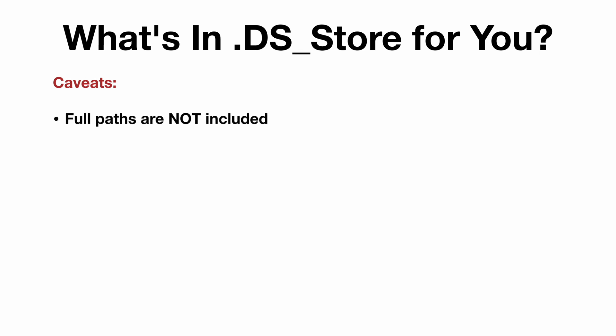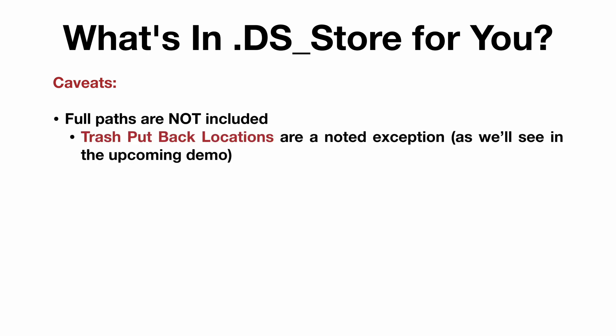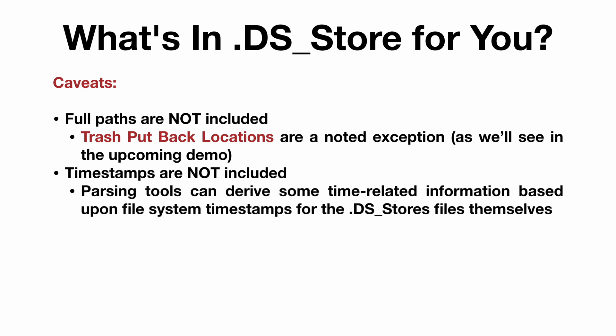Let's talk about a few caveats you should be aware of. First off, full paths are not included within the DS_Store files themselves. When we take a look at a tool that will help us parse these files, you'll see that a particular record type called trash putback locations ends up being an exception to this. Timestamps are also not included within DS_Store files, so each action recorded does not have a timestamp associated with it. That said, parsing tools can derive some time-related information based upon file system timestamps for the DS_Store files themselves — in other words, the creation and modification times for the files.